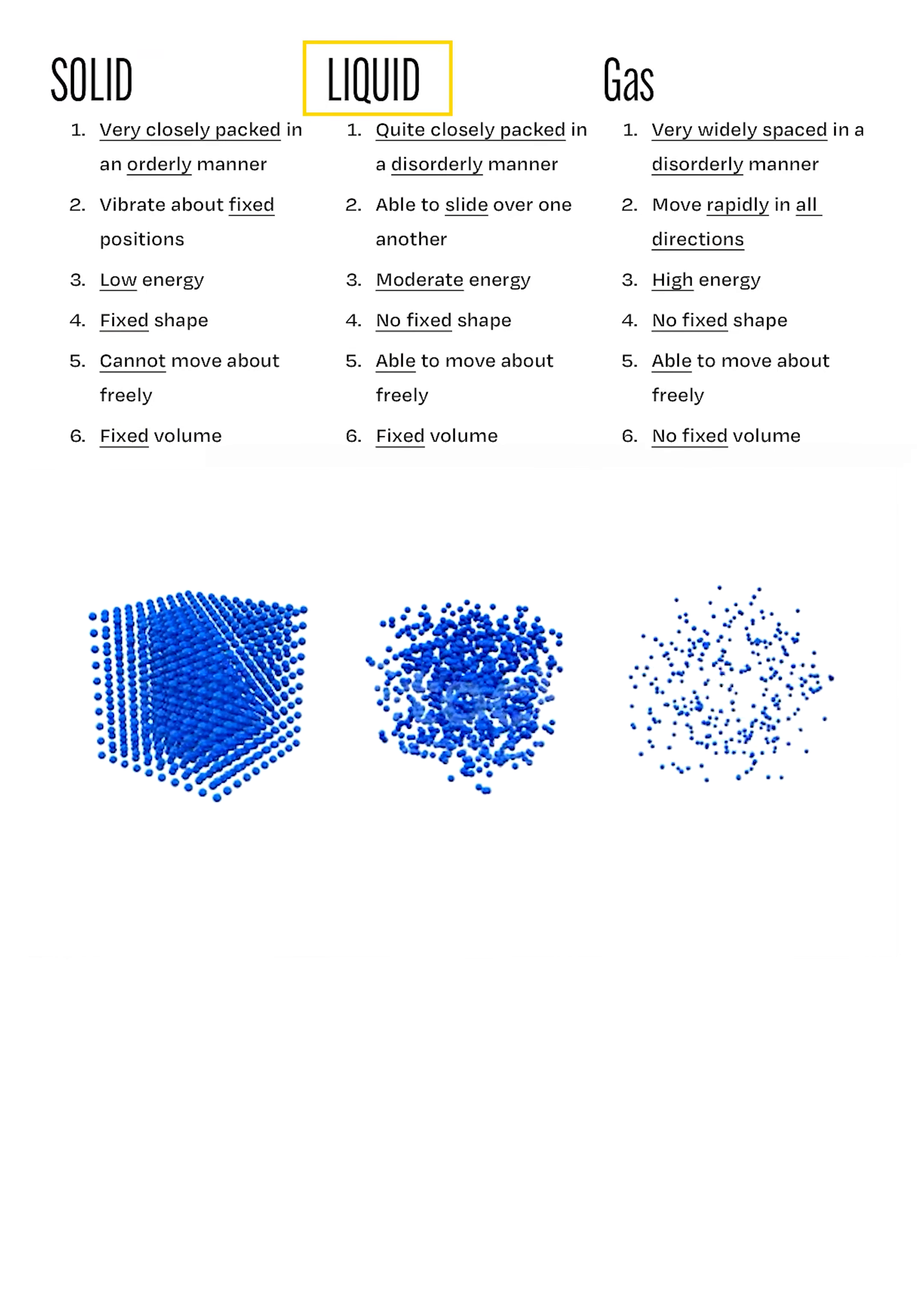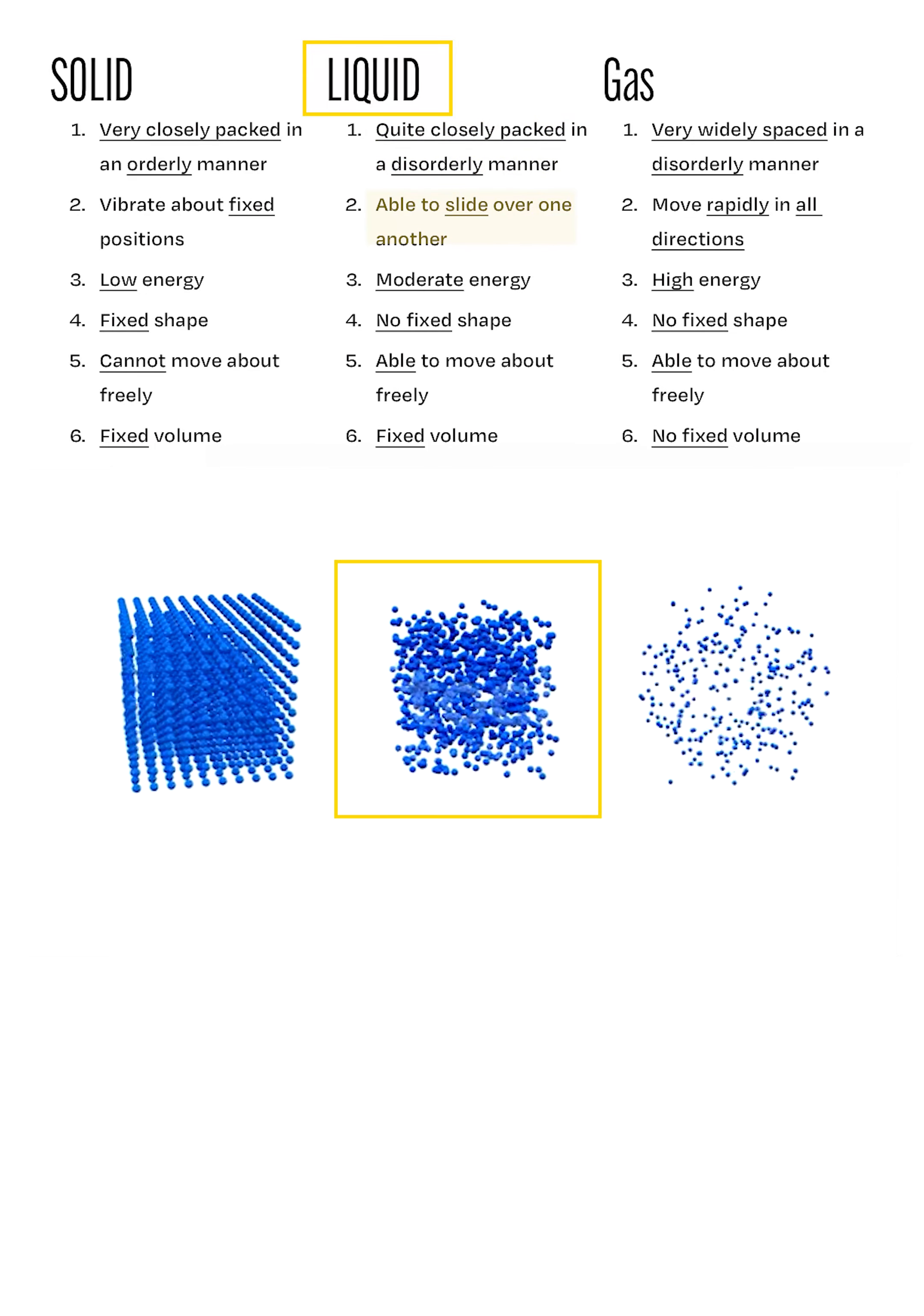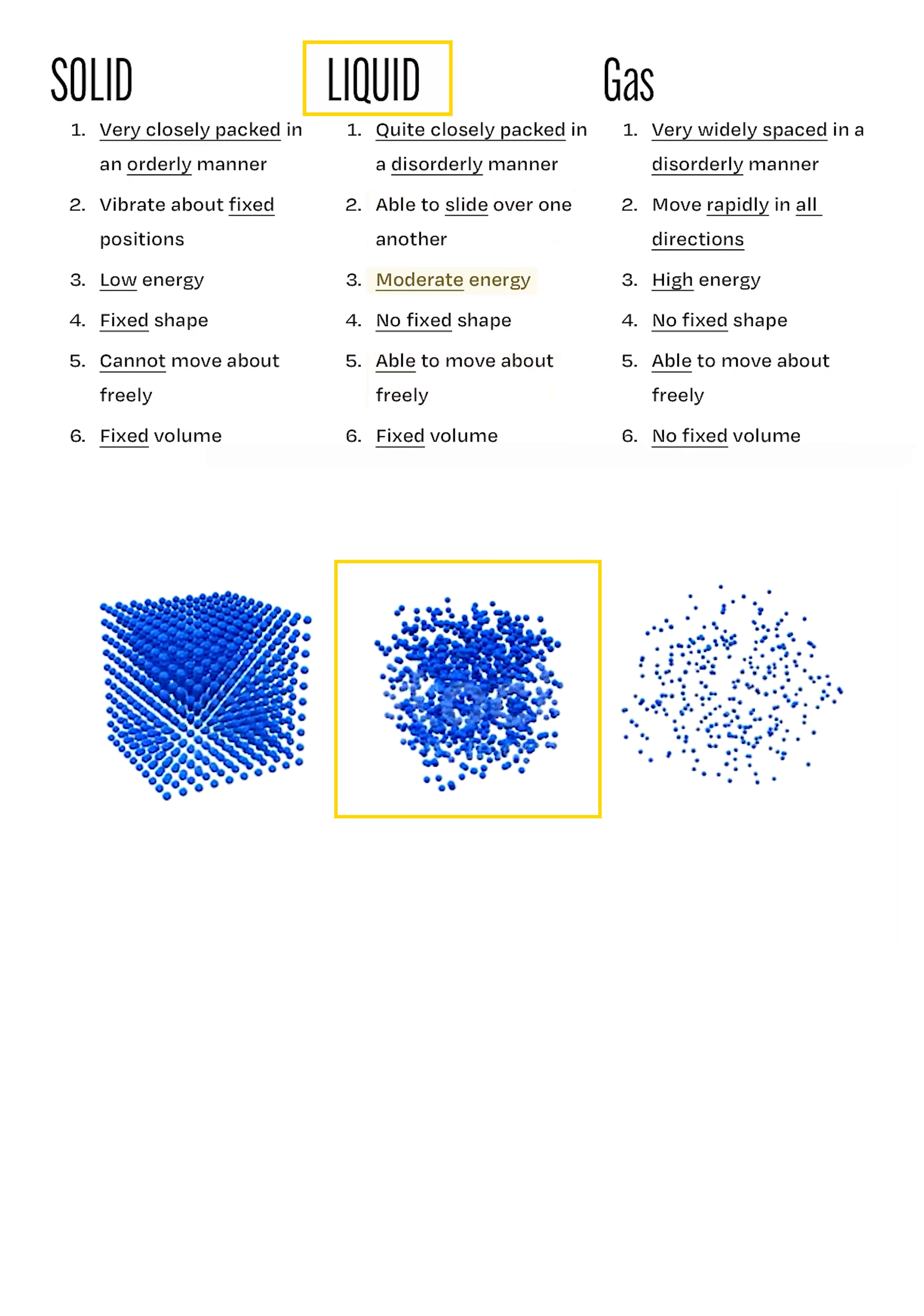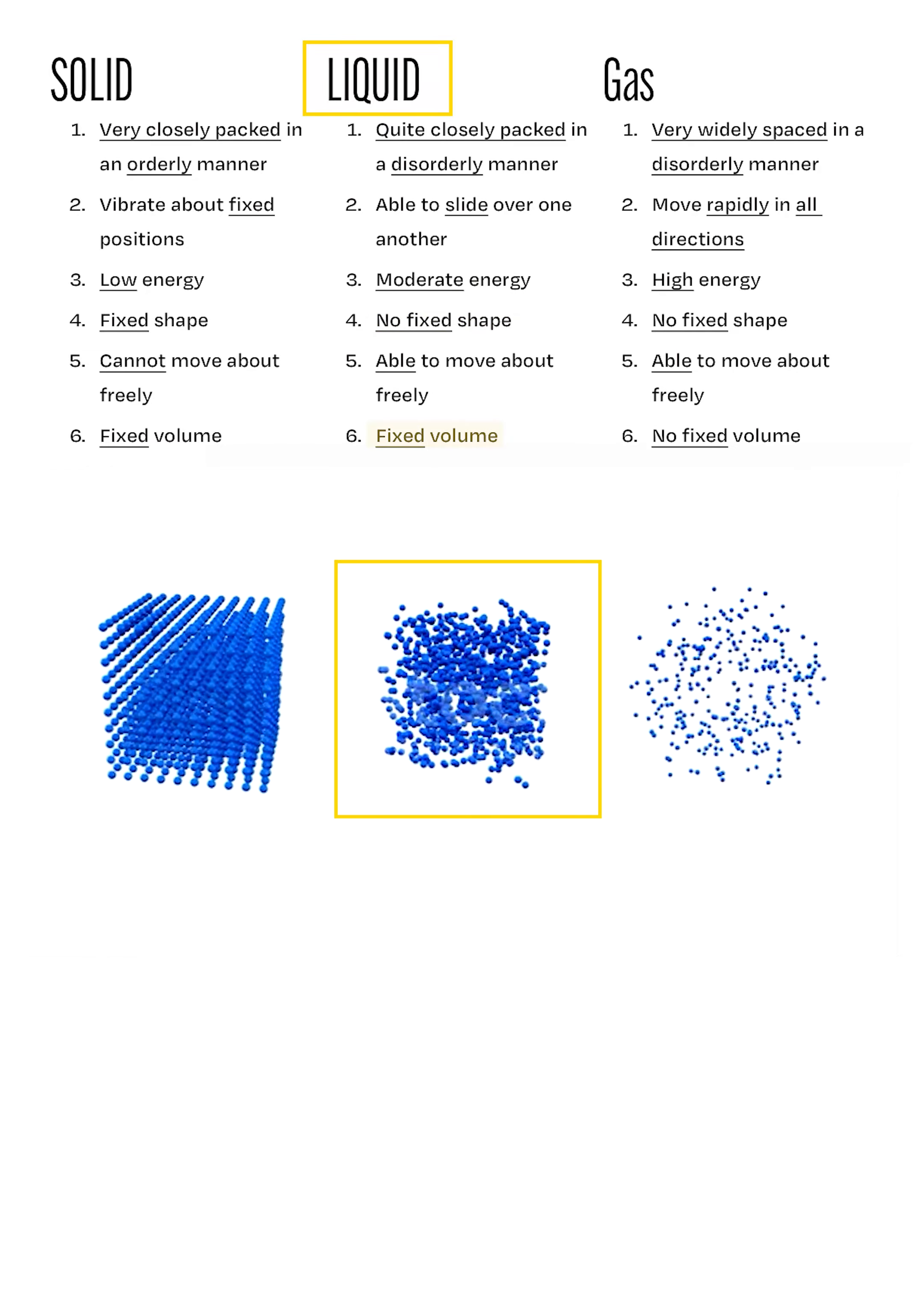On the other hand, when describing a liquid, the particles are quite closely packed and arranged in a disorderly manner. These particles are able to slide over one another and can move about freely within the confines of the liquid. Particles in a liquid also have a moderate amount of kinetic energy. Thus, because of these properties, liquids have no fixed shape but have a fixed volume.